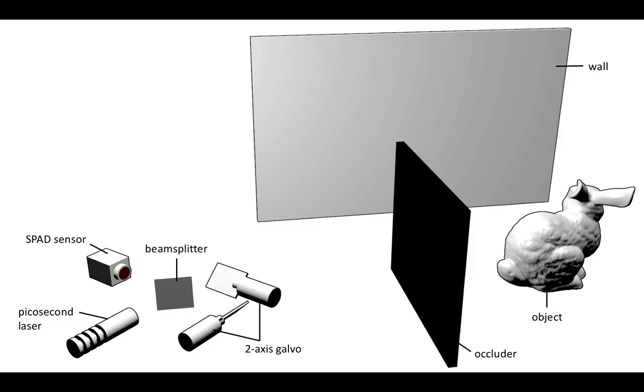Confocal non-line-of-sight imaging uses a pulsed laser to illuminate a point P on the wall, which in turn indirectly illuminates the hidden object. The object reflects some of this light back to the wall, and a sensor detects the response at the same point P.